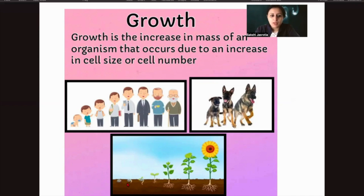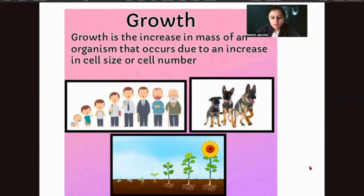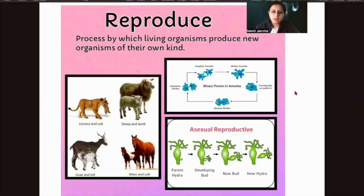Here is a diagram: a seed starts germinating and eventually grows into a big plant. We have seen dogs — a pet is small when you bring it home, and within no time it shoots up in height. Growth is seen in all living organisms. If you leave a pen or a chair for weeks or a year, it will never grow — growth is not seen in non-living objects, only in living organisms.